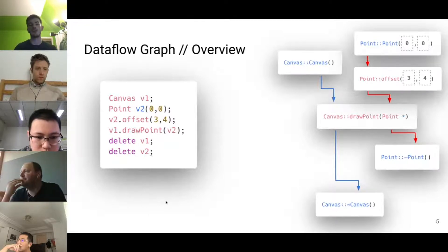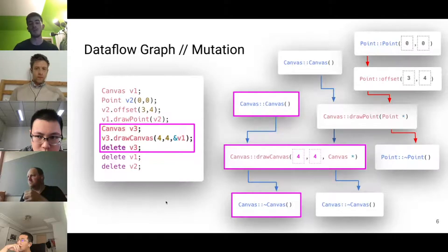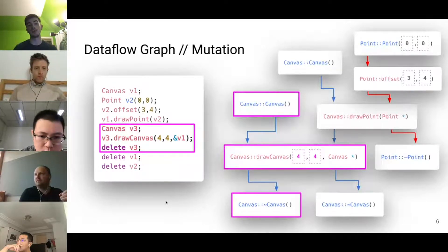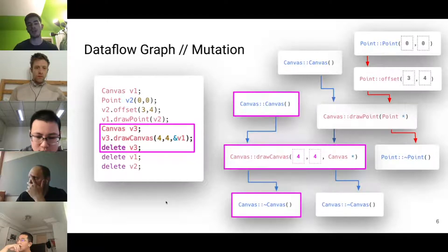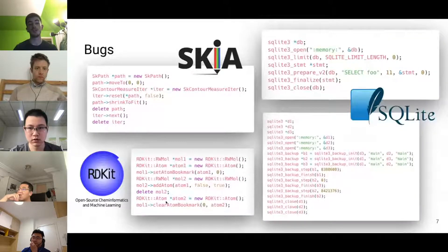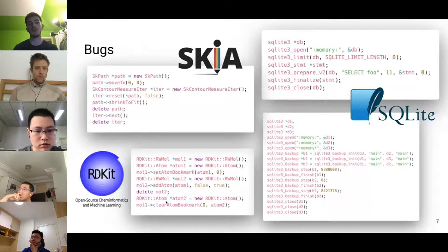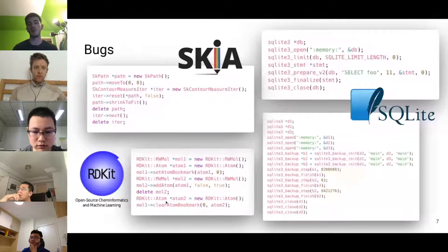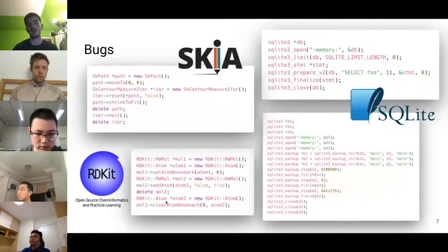This representation allows high-level structure-aware mutations on the test case sequence — for example, adding three new functions properly linked into the graph, with equivalent changes visible in source code view. GraphFuzz can perform this mutation and execute the resulting API test case, enabling efficient mutation and testing during fuzzing. We applied GraphFuzz to many open-source libraries and found bugs in nearly all of them — including Skia (the graphics library used in Chrome and Android), RDKit (a cheminformatics library), and SQLite3 — all of which had been fuzzed extensively before.